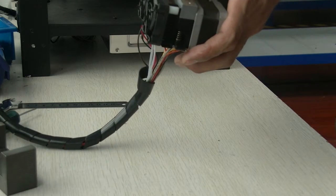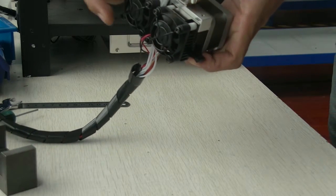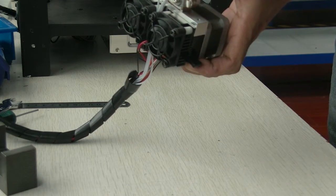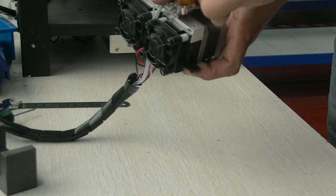First, the heating tube is locked in the small aluminum block, and there's one set screw to lock the heating tube.